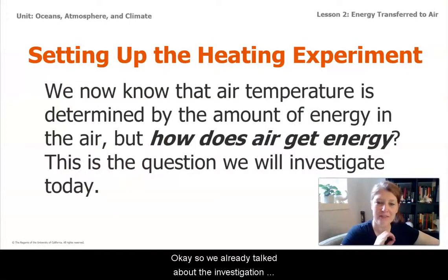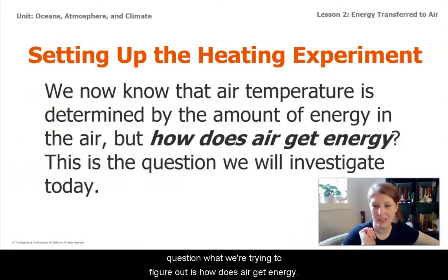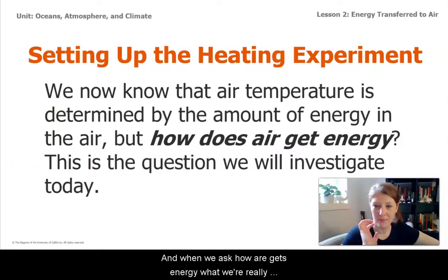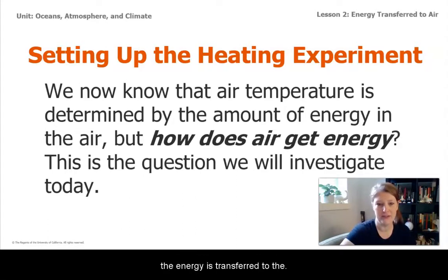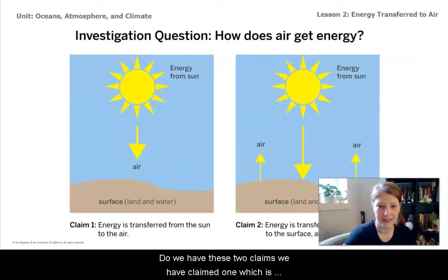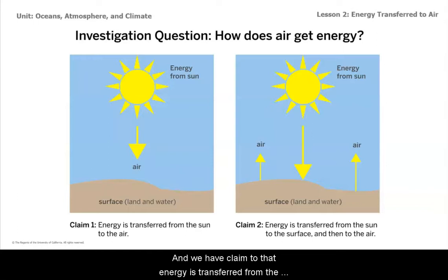So we already talked about the investigation question. What we're trying to figure out is how does air get energy? When we ask how air gets energy, what we're really asking about is energy transfer — we want to know how the energy is transferred to the air. So we have these two claims. Claim one says that energy is transferred from the sun to the air. And claim two says that energy is transferred from the sun to the surface, and then from the surface to the air.